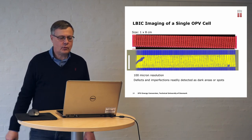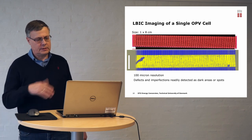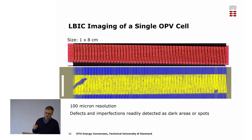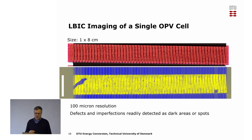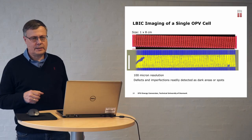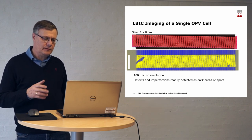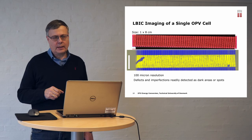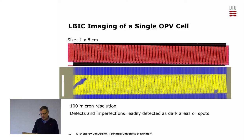Here's the result for a single 1 by 8 centimeter solar cell. You can see the photograph of the cell in the top part of the image, with two grid electrodes, and then the ELBIC image below. The parts of the solar cell that work fine are shown in yellow, and the low performing parts are in blue. You can immediately see that there are two large areas with defects that are not visible in the photograph, as well as smaller point-like defects along the grid electrodes. The resolution in the picture is about 100 microns.